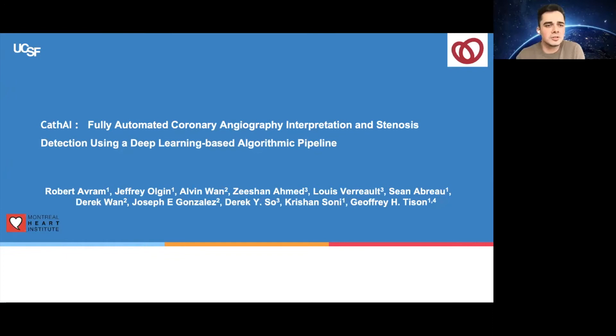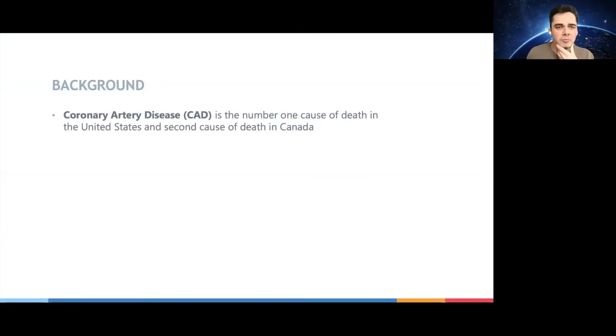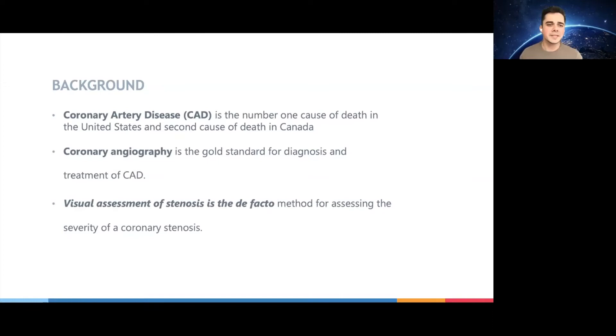I will also show you confusion matrices. And confusion matrices are displayed here as a cartoon to the upper right and lower right as well. So it basically represents the graphical display of true positive, true negative, false positive, and false negative. So it allows you to see where the AI model is making mistakes. So all of my examples today will show you confusion matrices and ROC curves. So I'm very excited today to share with you the final results of CAPAI, which is a fully automated coronary angiography interpretation and stenosis detection using a deep learning based algorithmic pipeline. This project started three years ago in San Francisco and we recently validated at Ottawa Heart Institute.